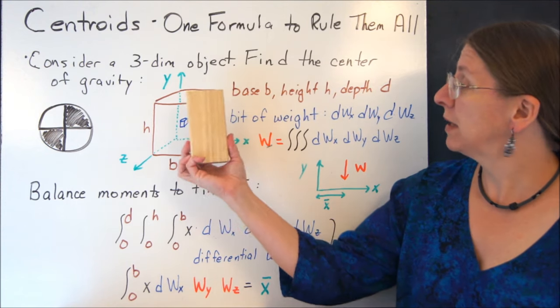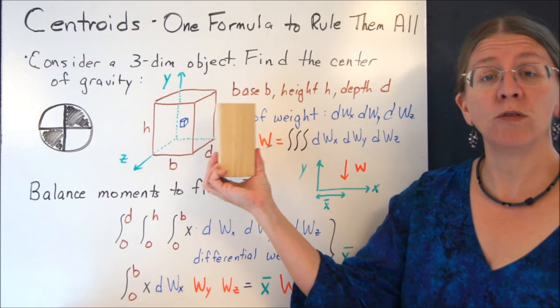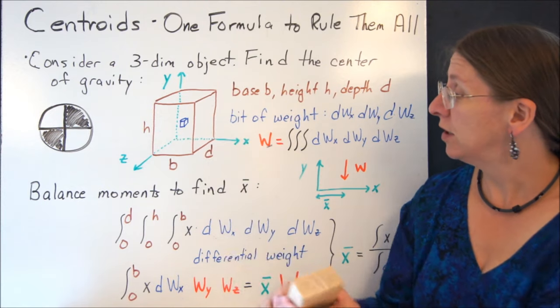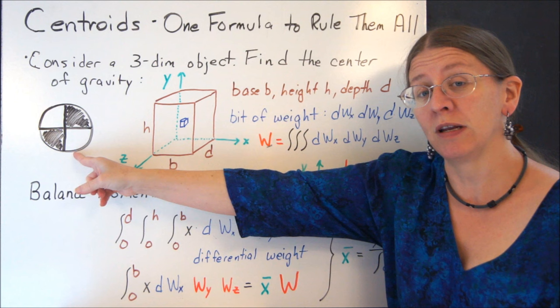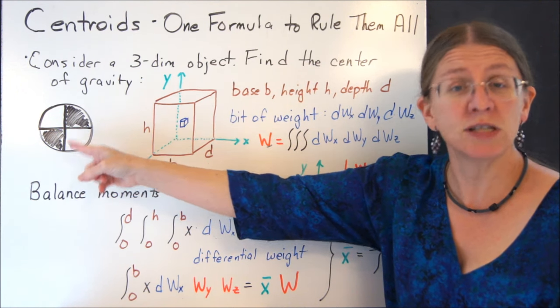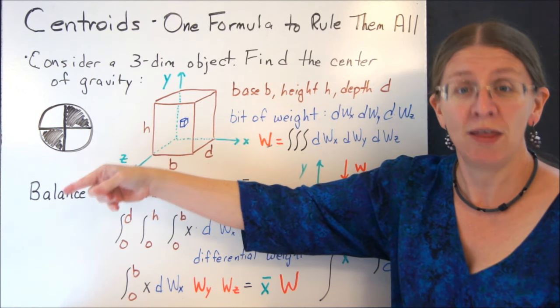Consider some three-dimensional block like this, where I want to find the center of gravity. Now I could define an axis system. This, by the way, is what a center of gravity symbol looks like. If you see one of these, that means they're telling you that's the center of gravity.